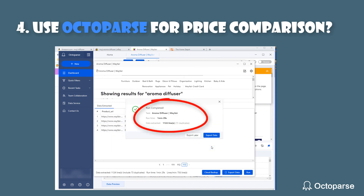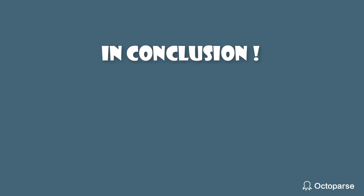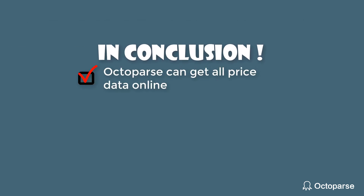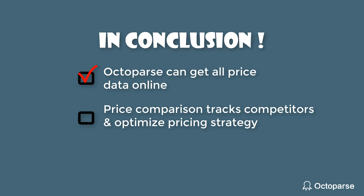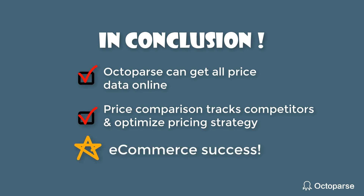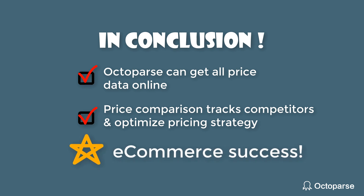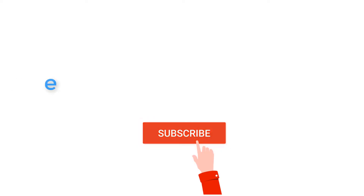Now you get over a thousand price data points within minutes. In conclusion, Octopus can help you get all price data online. You can use this price data to build a price comparison model to track competitors and optimize your pricing strategy. With a pricing strategy that adapts to market fluctuations, you can get long-term steady profits that lead you to e-commerce success. That's it — see you.